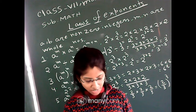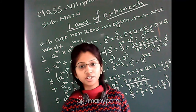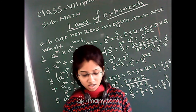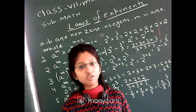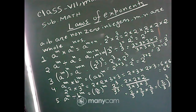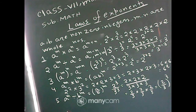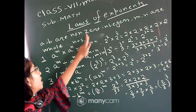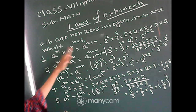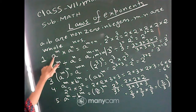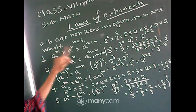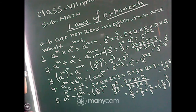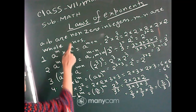Good afternoon students. In the previous class we completed exercise 13.1 of chapter Exponents and Powers, so today we will discuss the laws of exponents. Let a, b be non-zero integers and m, n be whole numbers. The first law is: a to the power m into a to the power n is equal to a to the power m plus n. Here the bases are same but the powers are different.